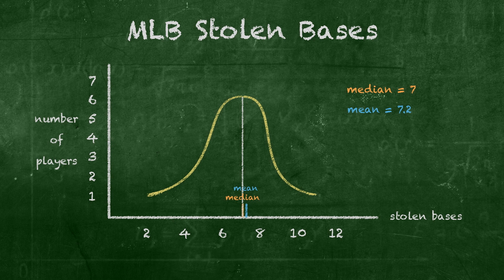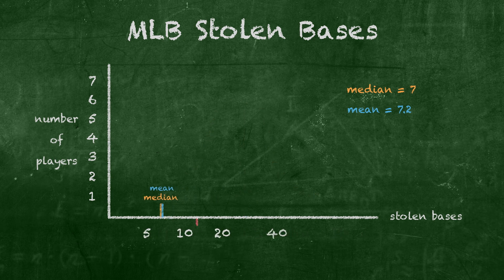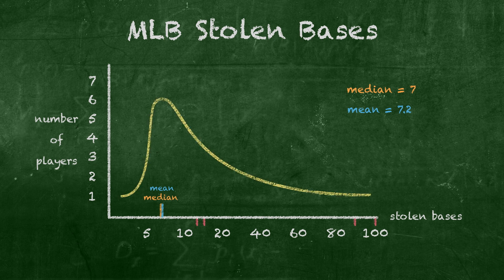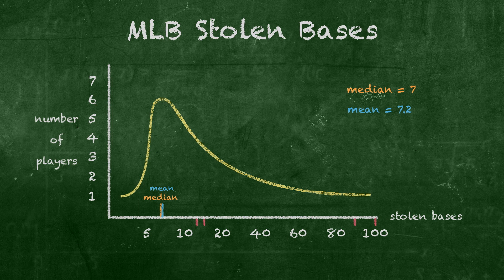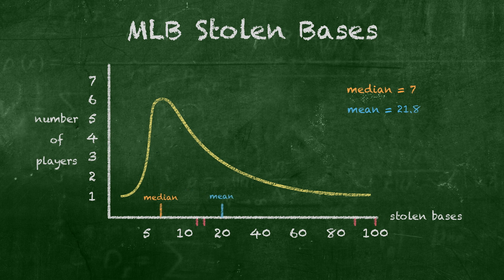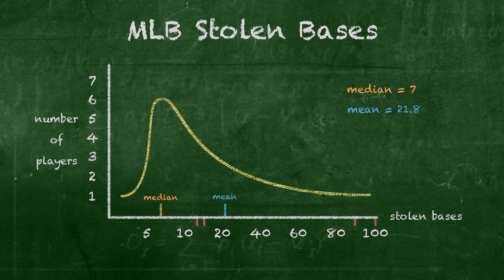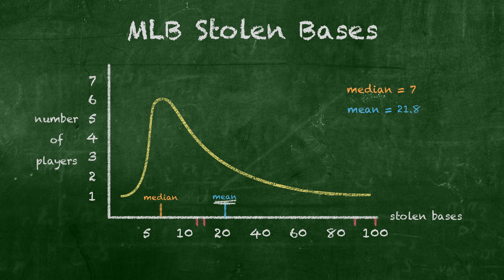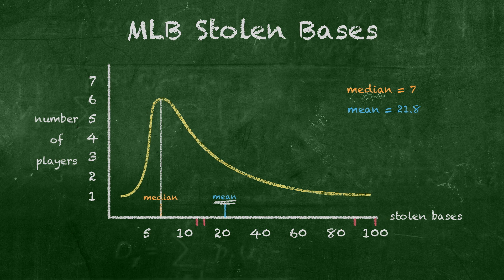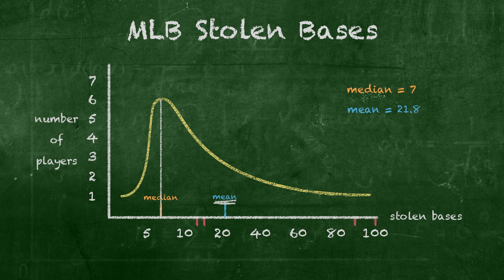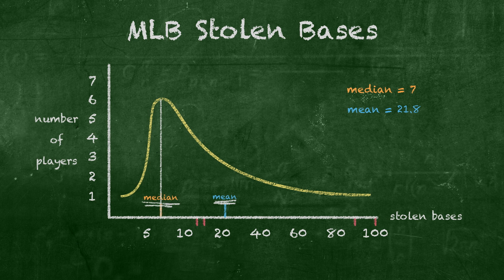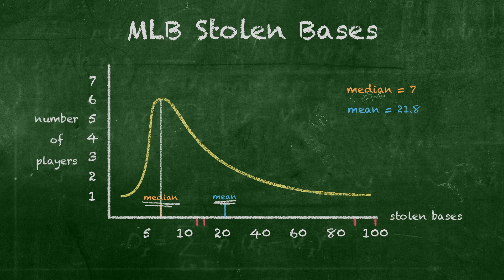But what if we added some stellar base runners, say with 13, 15, 90, and even 100 stolen bases to this sample? In that case, median would remain 7, but the mean shoots up to 21.8, skewing the data to the right — an indication that the mean might not be useful in describing the center of this data. Yes, median is much more representative of these players' skills because it's closer to the majority of the numbers in the data set.